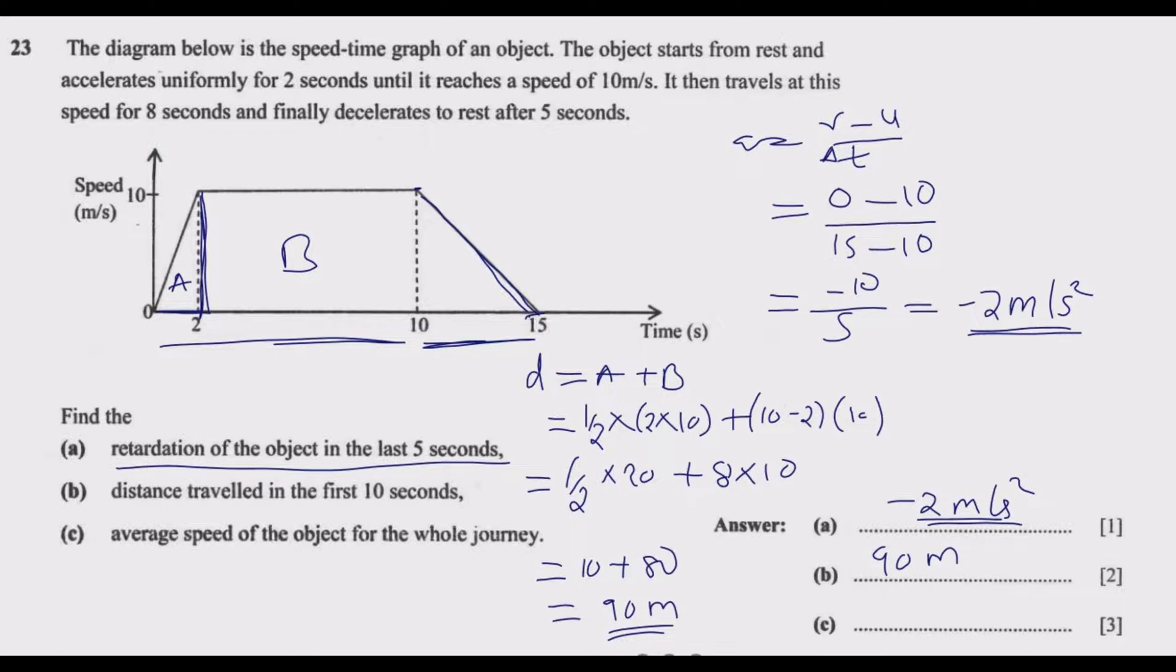Part C: average speed of the object for the whole journey. To find average speed, we also need to know the distance it traveled under C so we know the total distance. Remember, average speed is given by total distance over time.